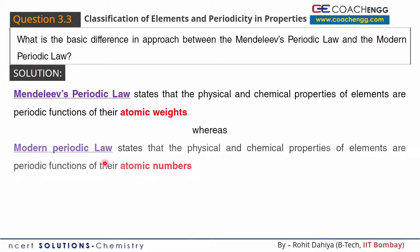Whereas the Modern Periodic Law states that the physical and chemical properties of elements are a periodic function of their atomic numbers. If we arrange elements in order of their atomic numbers, their properties repeat after a fixed interval. So this is the required answer, thank you so much for watching.